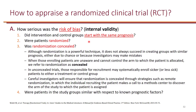By concealing the randomization process, we make sure that people responsible for recruitment do not systematically enroll sicker patients into either a treatment or control group, because then the patients will not have the same prognosis in both groups.